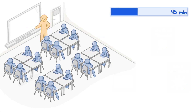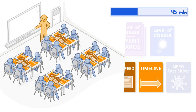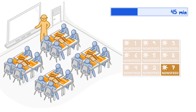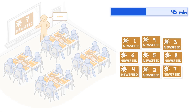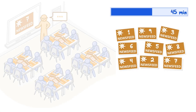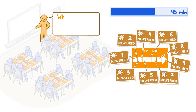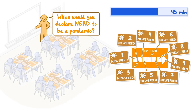In part 2, provide each group a set of NERD newsfeed posts and each student a NERD timeline. Together as a class, choose one post, read it aloud, and demonstrate how to record the location and number of cases on the timeline. Instruct groups to continue this process using subsequent newsfeed posts. Encourage students to observe the spread of NERD, paying close attention to the number and location of cases. Instruct students to think critically about when they might declare NERD to be a pandemic and what criteria they would use to justify their decision.